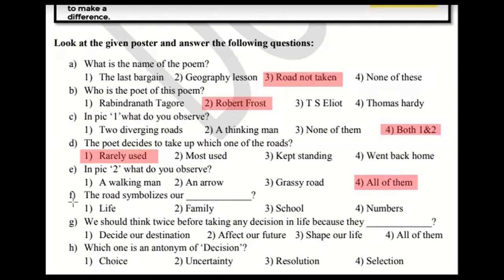Question F: The road symbolizes our — option 1: life, option 2: family, option 3: school, option 4: numbers. This is a direct question. The roads shown here represent our life — option 1 is correct. Question G: We should think twice before taking any decision in life because — option 1: they decide our destination, option 2: they affect our future, option 3: they shape our life, option 4: all of them. Option 4 is correct because our decisions do all three of these things.